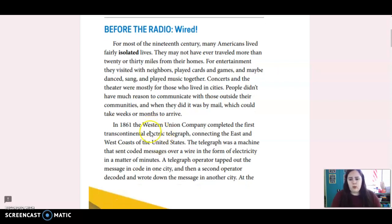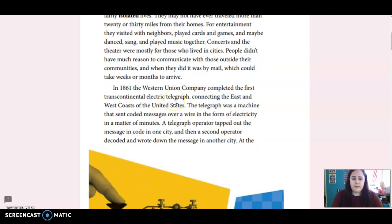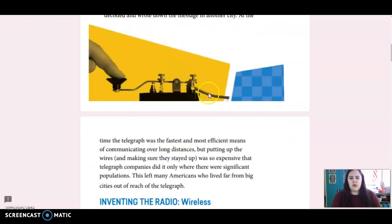In 1861, the Western Union Company completed the first transcontinental electric telegraph connecting the east and west coasts of the United States. The telegraph was a machine that sent coded messages over a wire in the form of electricity in a matter of minutes. A telegraph operator tapped out the message in code in one city, and then a second operator decoded and wrote down the message in another city.